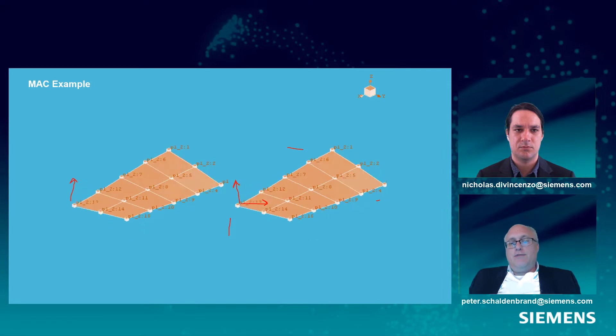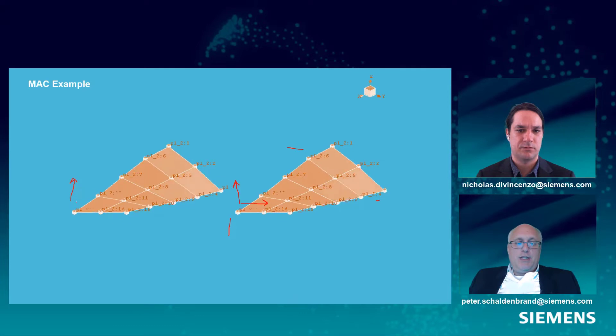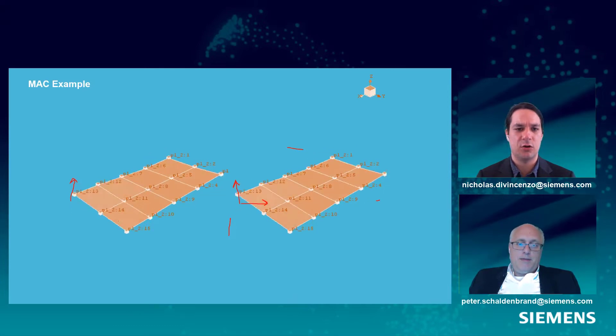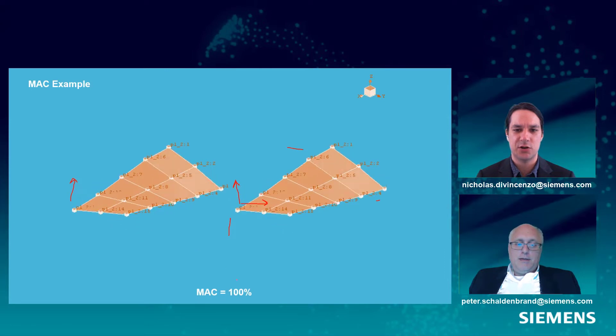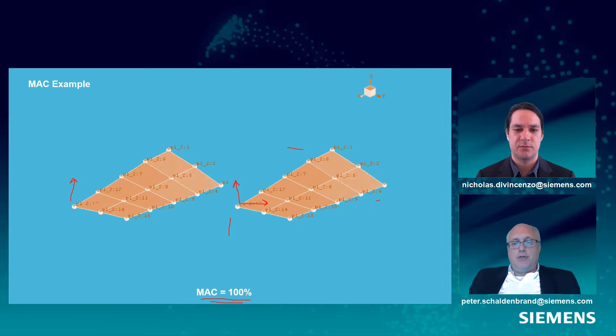And in this case, if we were to look at all the points, are they all moving the same from the mode shape on the left versus the right, Nick? I would say yes, they all appear to be moving in the same direction. Yeah, then we would have a modal assurance criterion of 100%.